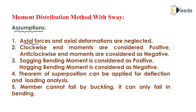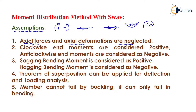First, axial forces and axial deformations are neglected — that is, member tension and compression forces are neglected. Clockwise moments are taken as positive and anticlockwise moments as negative. Sagging bending moments are taken as positive whereas hogging bending moments are taken as negative. The theorem of superposition can be applied for deflection and loading analysis. In the moment distribution method with sway, a member cannot fail by buckling; it can only fail in bending.